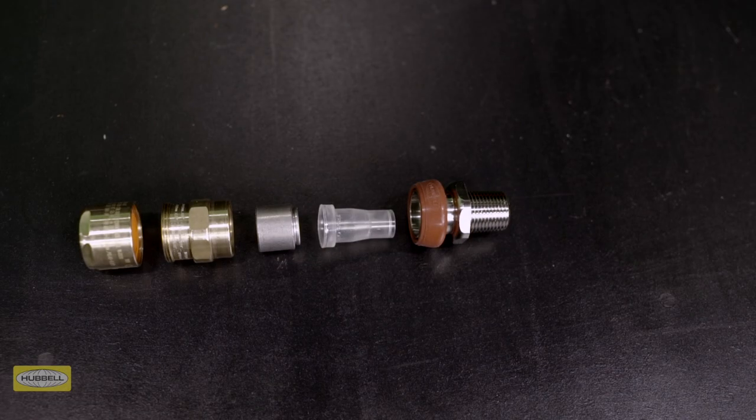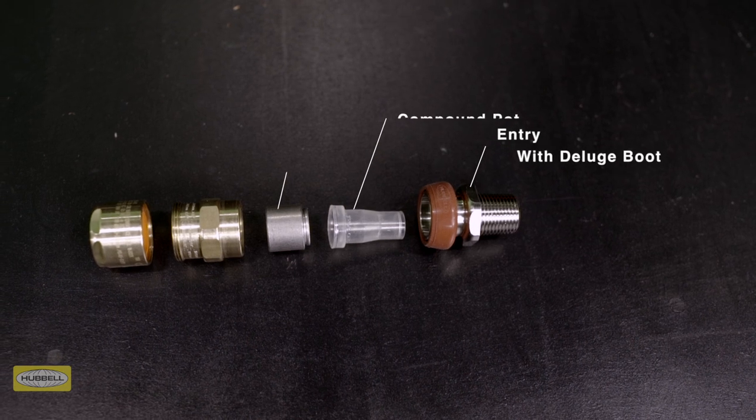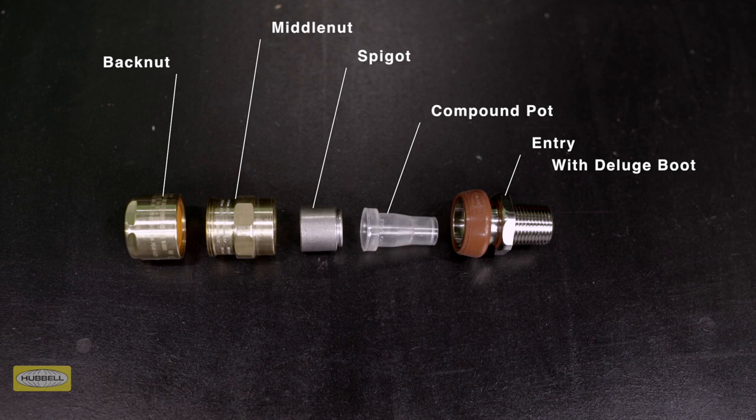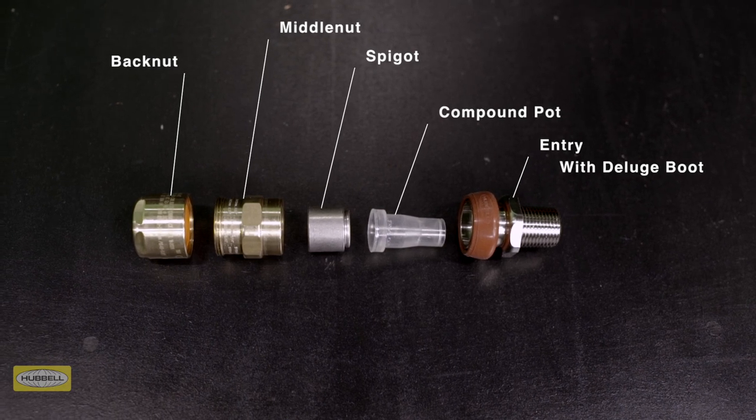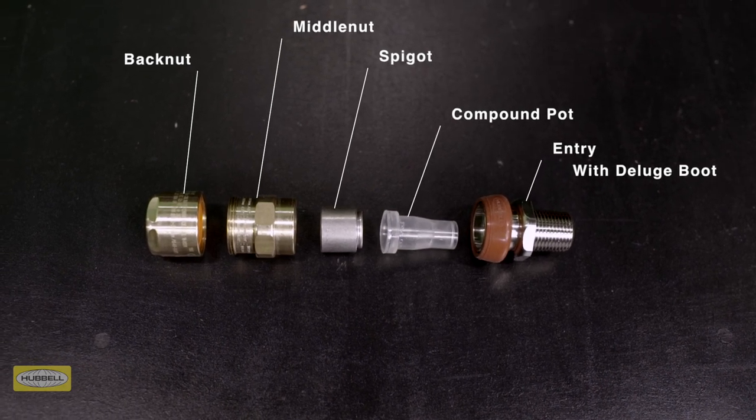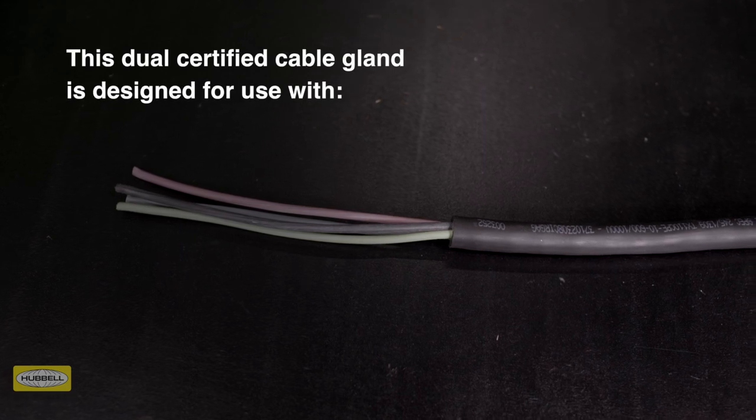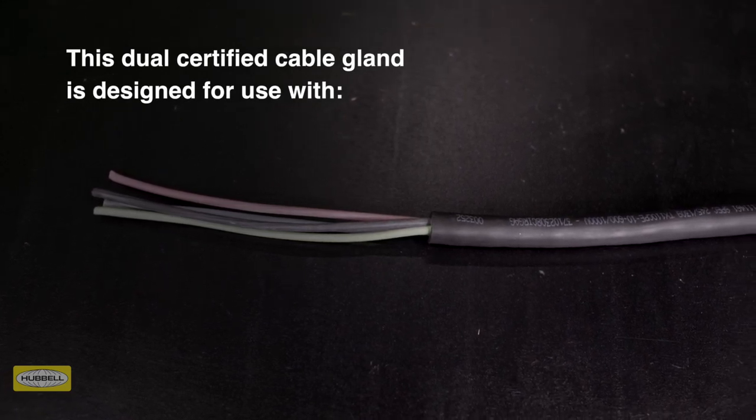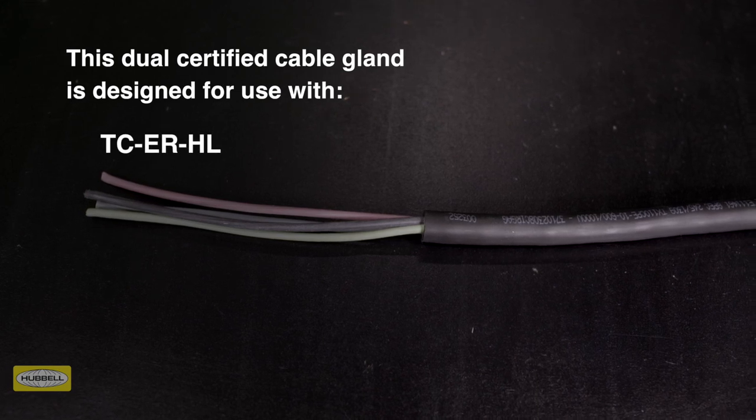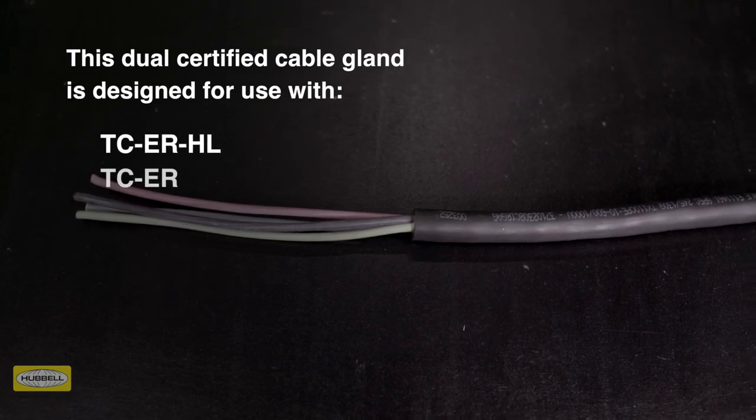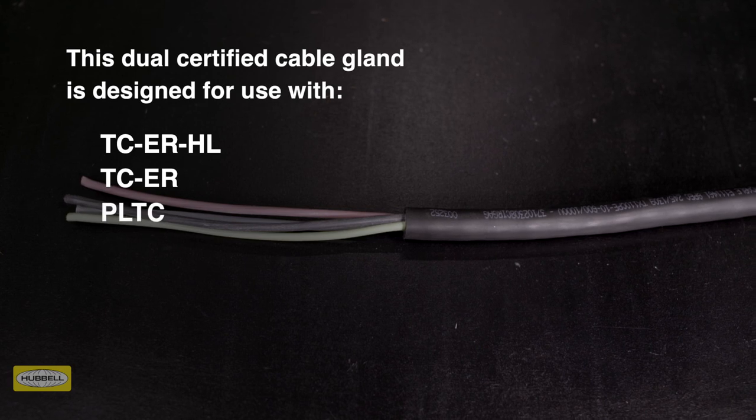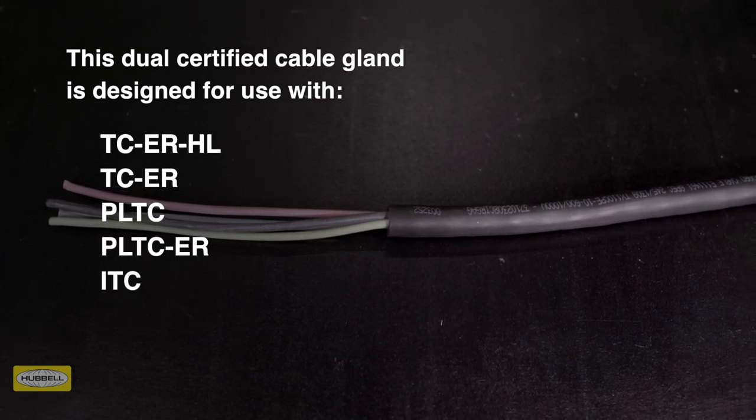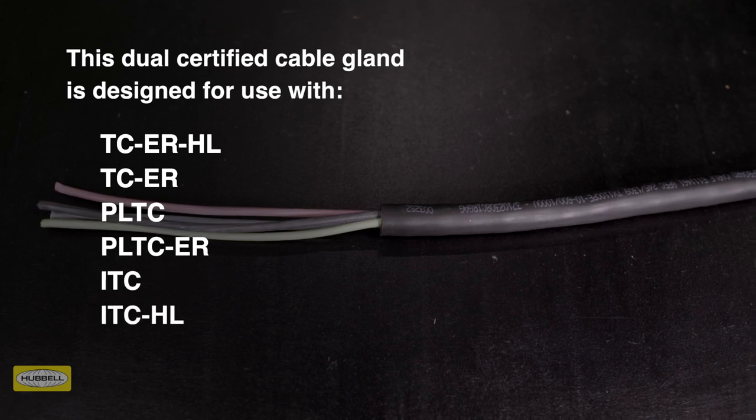The 710 cable gland consists of five key components: entry with deluge boot, compound pot, spigot, middle nut with patented tightening guide, and backnut. This dual certified cable gland is suitable for use with the following cable types: TC-ER, HL, TC-ER, PLTC, PLTC-ER, ITC, ITC-HL, and ITC-ER.